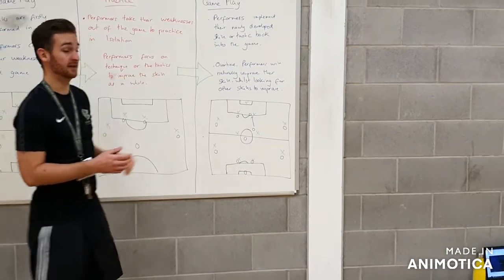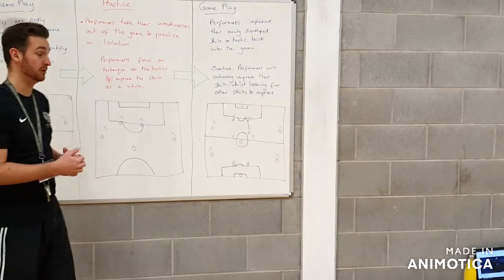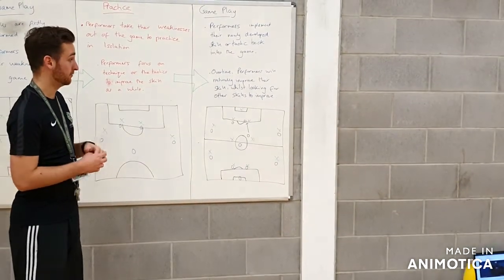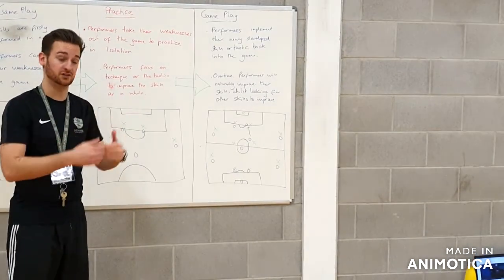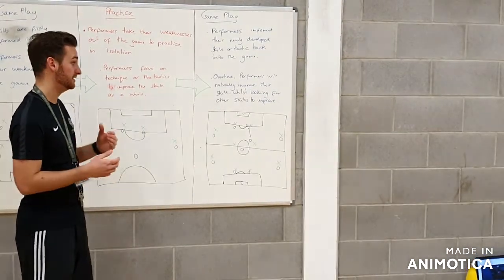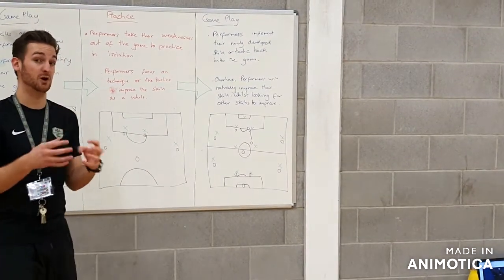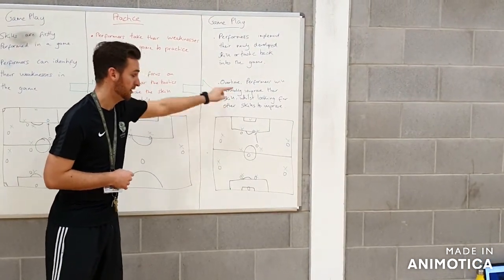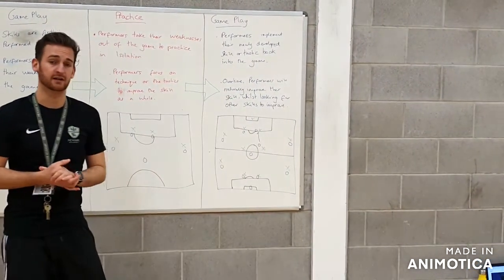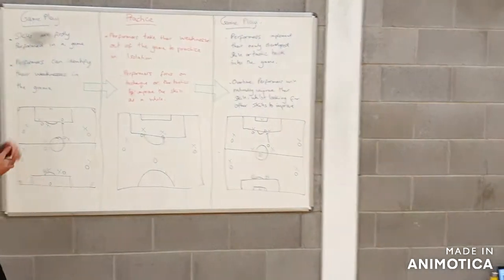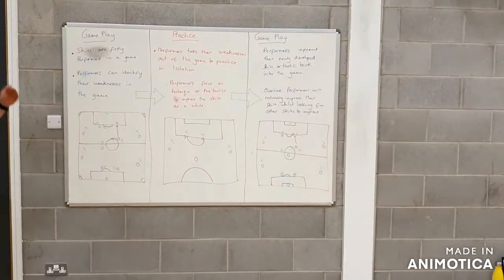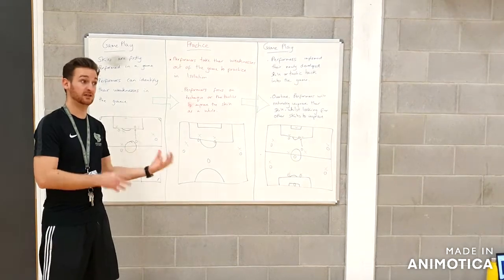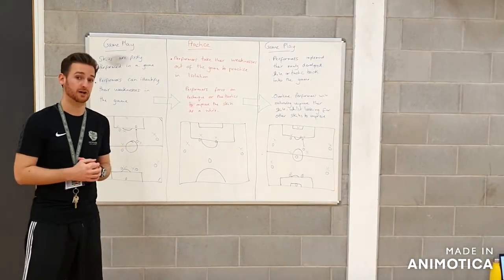When we move back into the game, we're now thinking about how we can implement marking when we play against the blue team once again. This time around we should see a natural progression — the green team should be able to mark better, which is going to stop the blue team from attacking during the game. This whole idea of whole-part-whole is slowly developing the skill within different parts of practice.